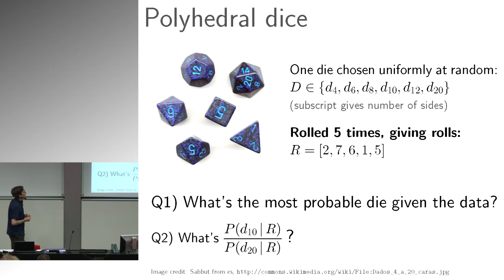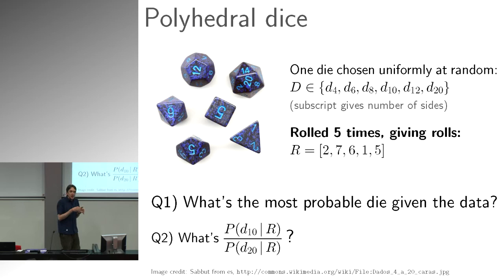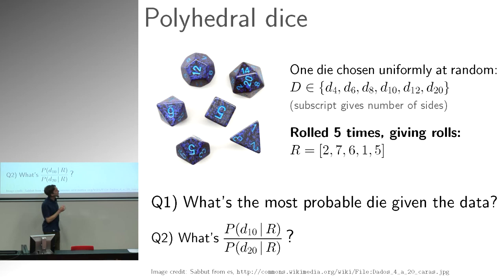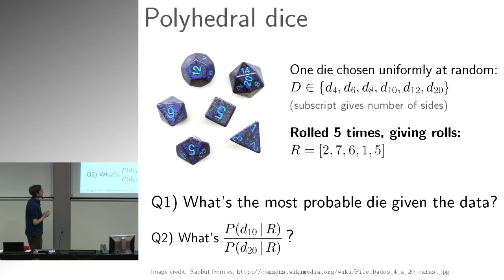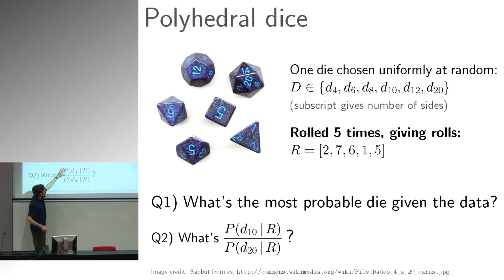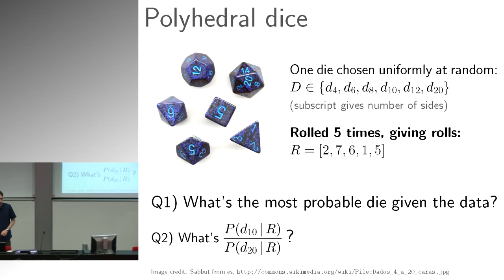Someone has selected one of these dice at random, but you don't know which one. They rolled the dice they picked five times and got some data — the numbers they saw were 2, 7, 6, 1, 5. The question is: which die do you think they picked? And there's a quantitative question: how much more or less probable is the ten-sided die compared to the twenty-sided die? I'll return to that in a couple of minutes.